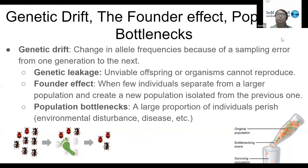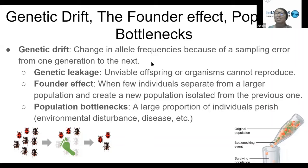Mutations are one group that can change allele frequencies. Another aspect is genetic drift, which is the change in allele frequencies because of a sampling error from one generation to the next. Genetic drift is most common in smaller population sizes. Under that umbrella, there is genetic leakage, which is when organisms produce unviable offspring or can't reproduce, suddenly removing a whole group of offspring and changing allele frequency.